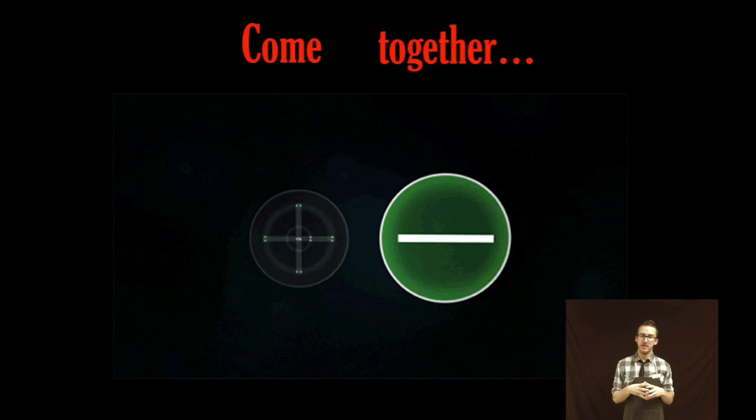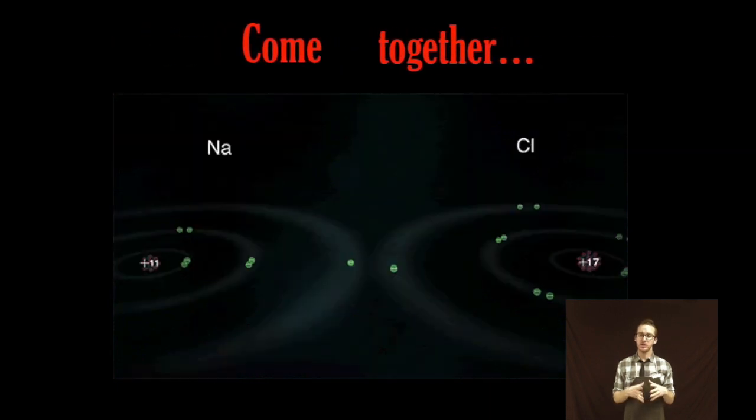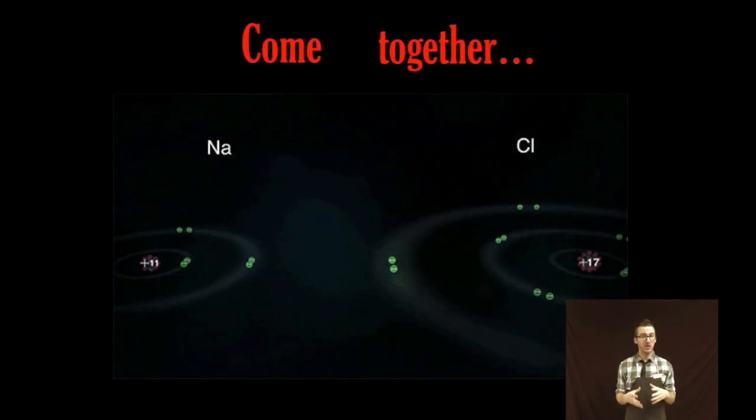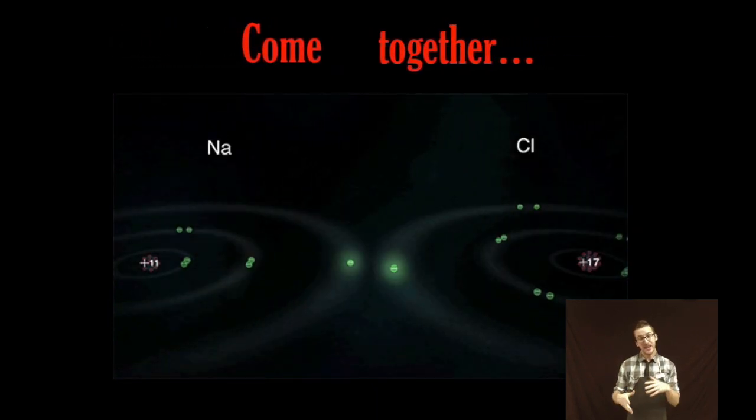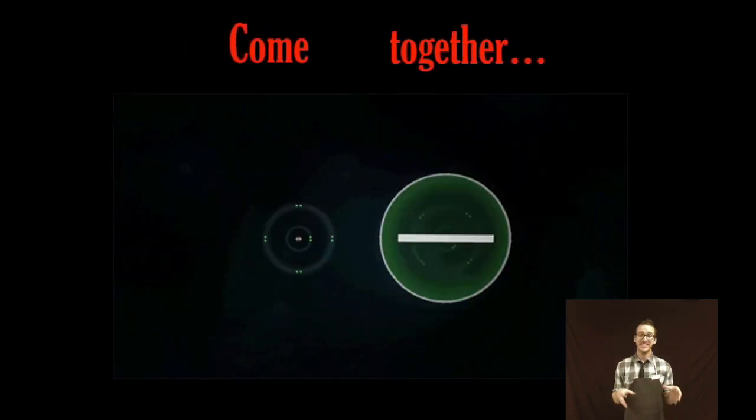So as I come back to this animation, recognize here that it's the chlorine atom, or the non-metal, that's gaining the electrons to form the anion, or negatively charged ion, after it has gained an electron.